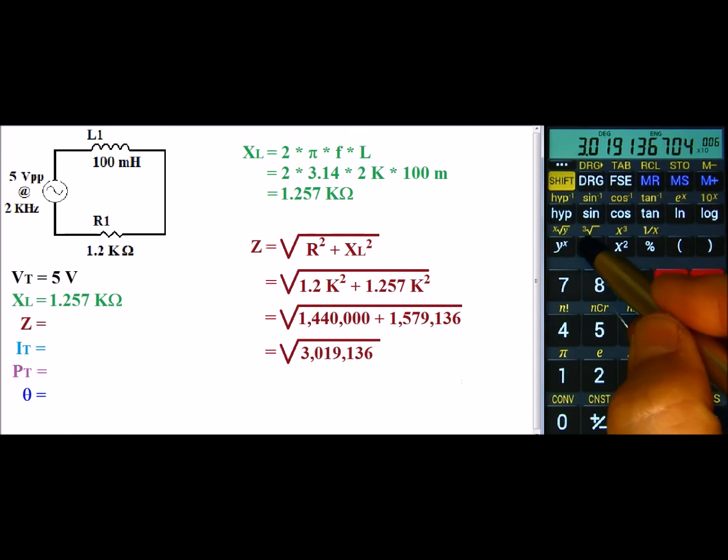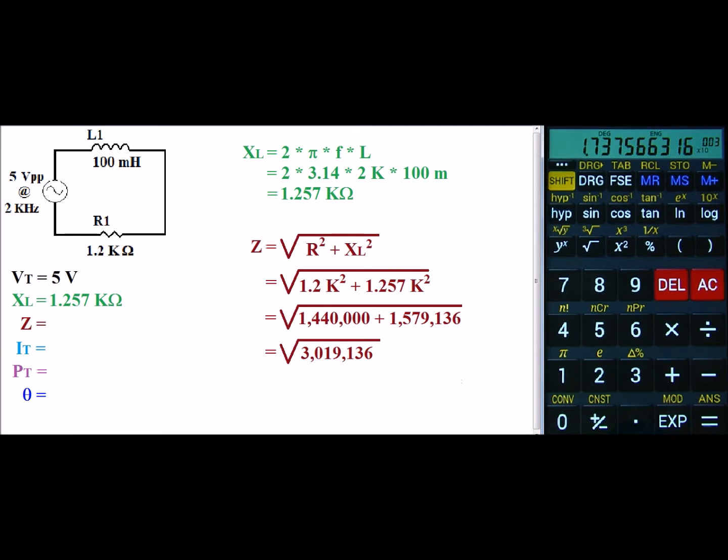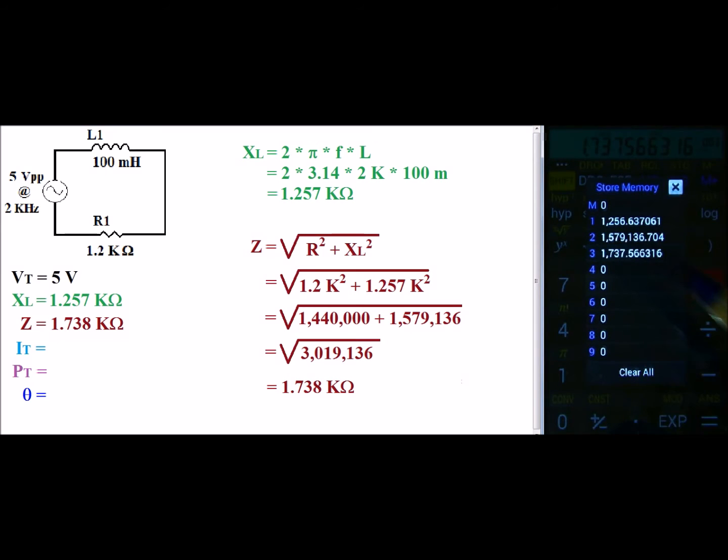Now all I have to do is hit the square root, and the total impedance of the circuit is 1.738 kilo-ohms. And I will go ahead and store that value as well.